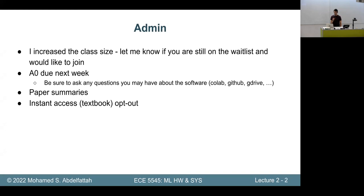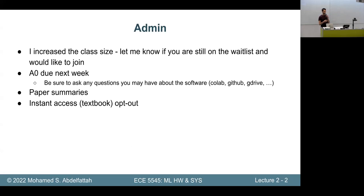A0 is due next week. A0 is a warm-up exercise to get you used to Google Colab, GitHub, and mounting Google Drive. It doesn't have any real meat, so make sure to ask any questions about these tools. By the time you're done with A0, you should know how to use these tools because A1 and then A2 — which is really long and difficult — will come next.